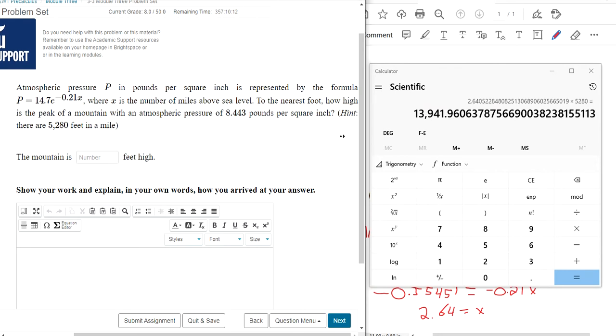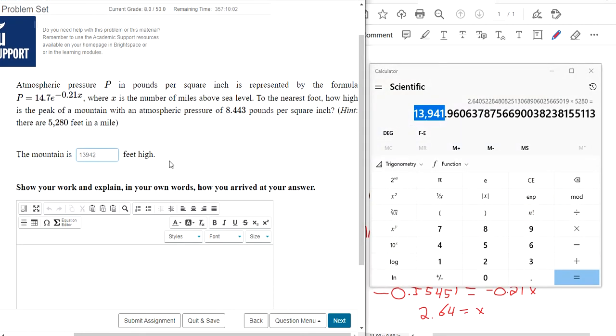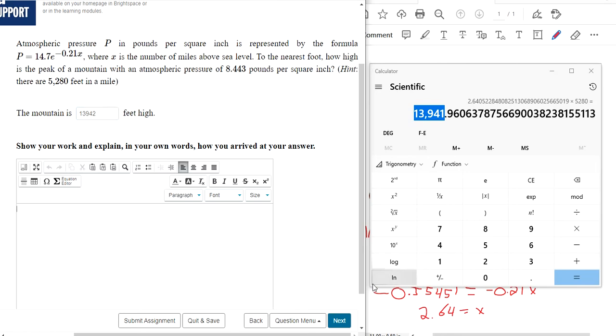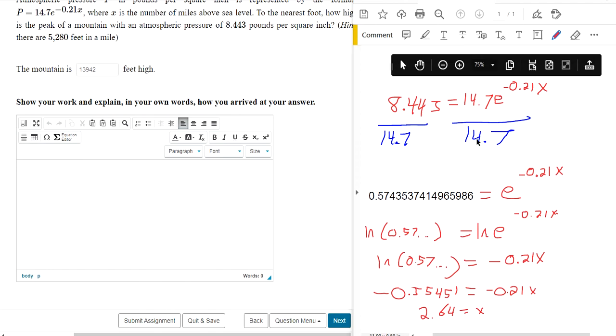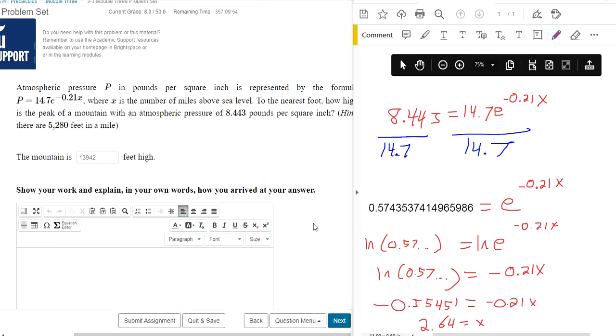did I say how many decimals? To the nearest foot. So 1, 3, I'm going to round up 1, 3, 9, 4, 2. And then this is where you can show your work. You know, you can explain this however you'd like. You can type it up, use the equation editor, just give an explanation of what you did in order to find the number of feet.